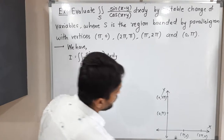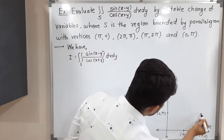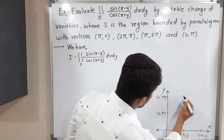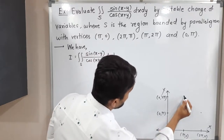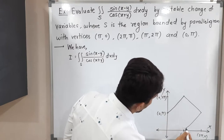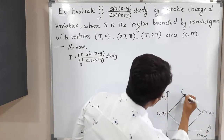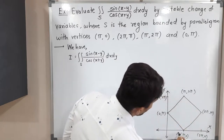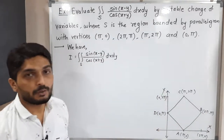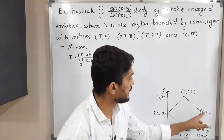The given points are: A = (π, 0), B = (2π, π), C = (π, 2π), and D = (0, π). Let me join them with straight lines to form the parallelogram. We need to find the equations of all four lines: line AB, line BC, line CD, and line DA.